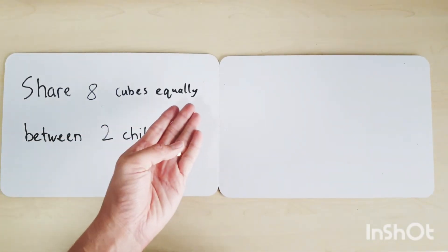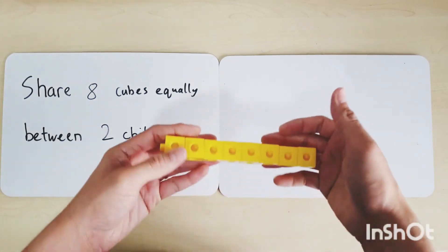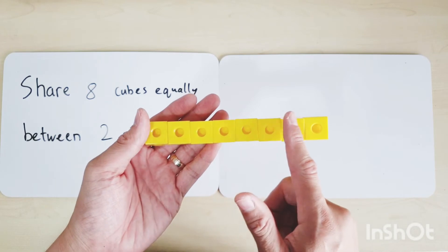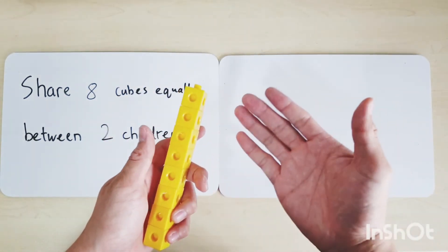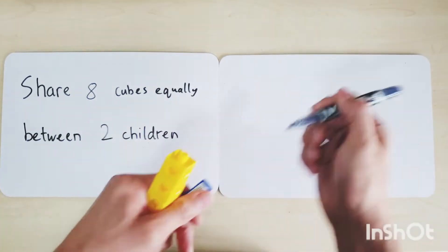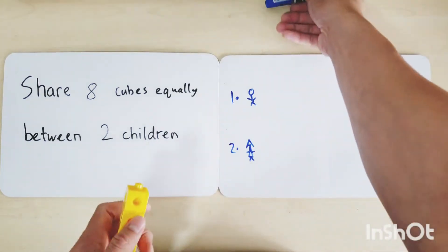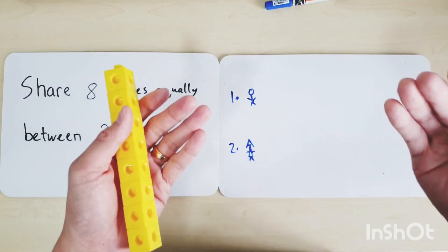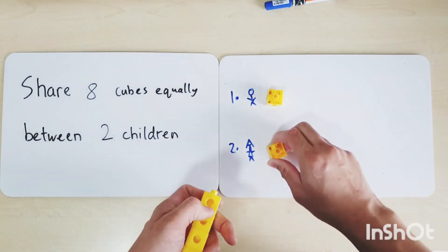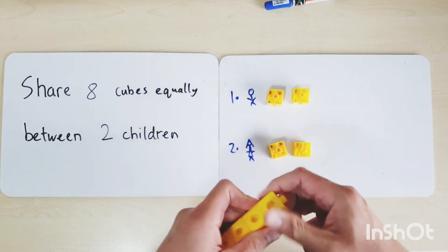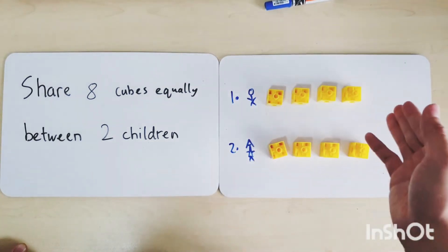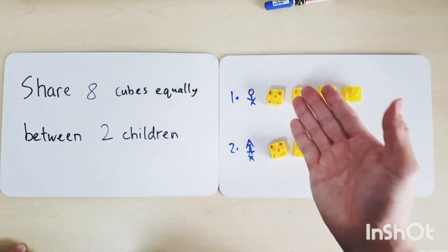Share eight cubes equally between two children. There are eight cubes: 1, 2, 3, 4, 5, 6, 7, 8. Let's try the method of giving each child one at a time. Child one and child two - two children, each must have equal amounts. We give one to child one, one to child two, and continue until all cubes are shared. Each child now has equal amounts of cubes.